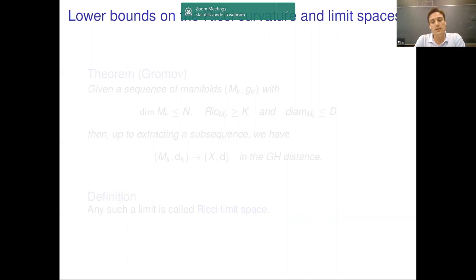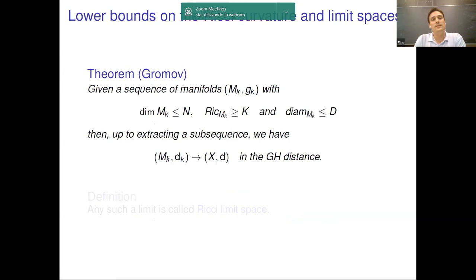It is the famous Gromov compactness theorem, which has opened the door for the study of non-smooth spaces with Ricci curvature bounded from below. The statement of Gromov's theorem is the following. Given a sequence of manifolds satisfying the following uniform bounds: we have a uniform upper bound on the dimension, a uniform lower bound on the curvature, and a uniform upper bound on the diameter, but this is actually not so important for the sake of this talk.